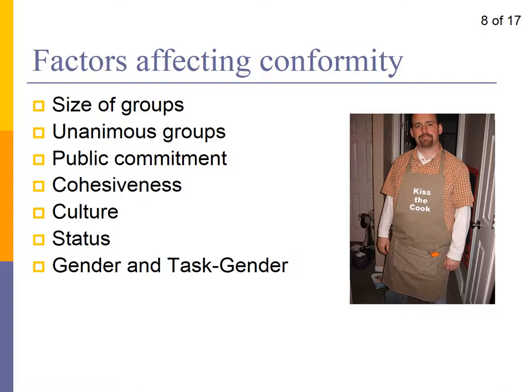There are too many factors affecting levels of conformity to talk about them all, so what you see on the slide highlights some of the best known or those considered to have the biggest influence. For example, generally speaking, the size of the group has been shown to increase conformity as the group gets bigger, but very quickly it seems that adding more people does not produce greater levels of conformity. You reach that maximum effect quite early on, even after only about three, four, or five people — seven, eight, nine upwards doesn't seem to increase levels of conformity.